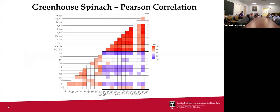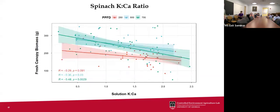Looking at Pearson correlations for spinach, we saw a pretty distinct trend compared to lettuce: having higher concentrations of each element had more antagonistic effects. Higher fertilizer concentrations in solution at the end of the experiment tended to have negative correlations with what was in the tissue, highlighting differences between crops and how they behave under different conditions. Again examining the potassium-to-calcium ratio, we saw a similar moderate relationship — lower potassium-to-calcium ratios were associated with higher yields — highlighting that it's often not just the absolute amount of one fertilizer but its relationship to others.